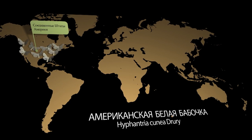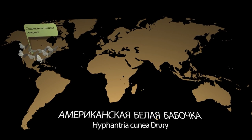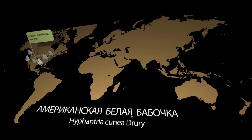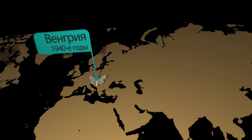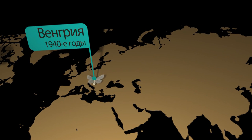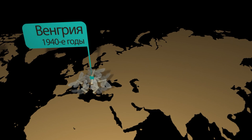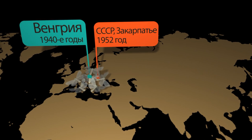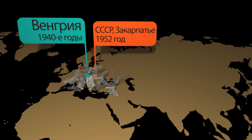Родиной американской белой бабочки является Северная Америка. Ареал её обитания простирается от южной границы Канады до северной границы Мексики. В Европе вредитель впервые был выявлен в 40-х годах в Венгрии, и в настоящее время широко распространился в большинстве европейских стран. На территорию бывшего СССР он проник в 1952 году в Закарпатье.